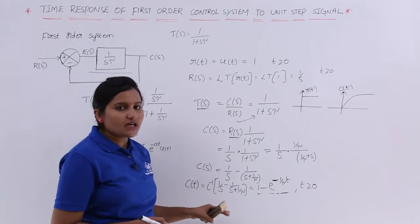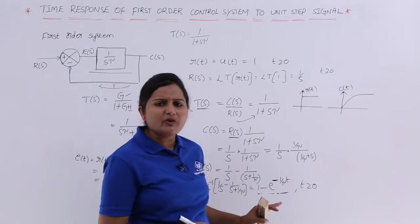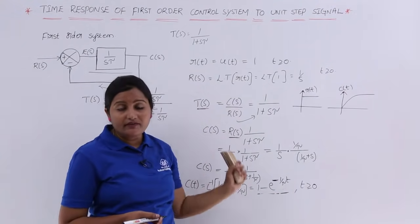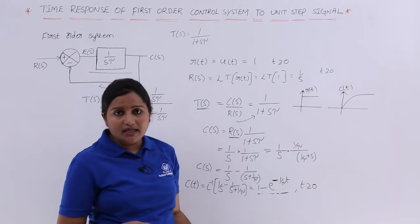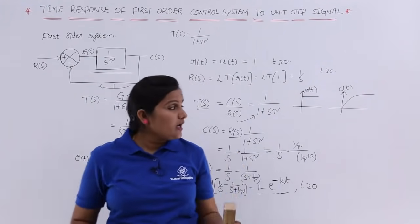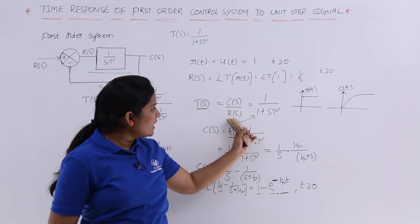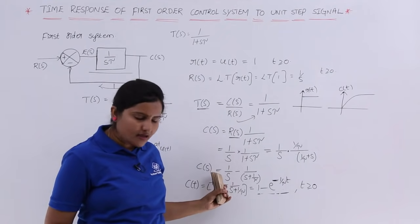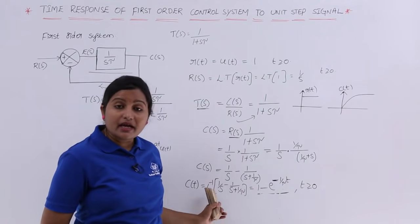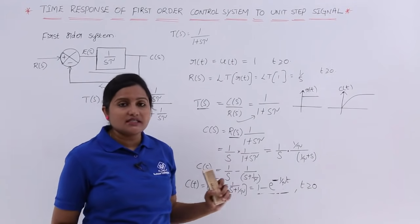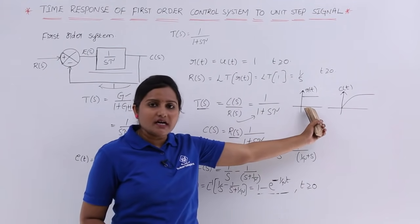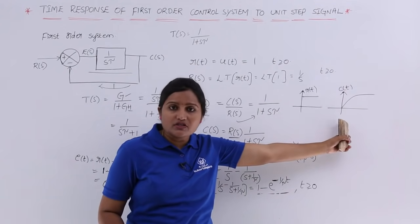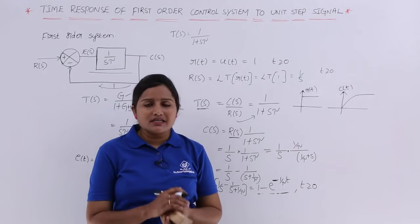In summary, the time response of a system means finding C(t). We started with the transfer function and the input, derived C(s) by multiplying T(s) and R(s), then obtained C(t) by taking the inverse Laplace transform. This gives us the time response of the first order system for a unit step input: C(t) = 1 − e^(−t/τ).